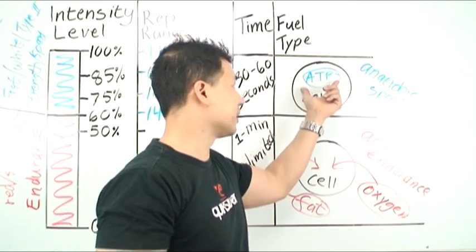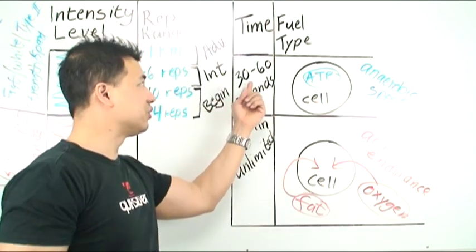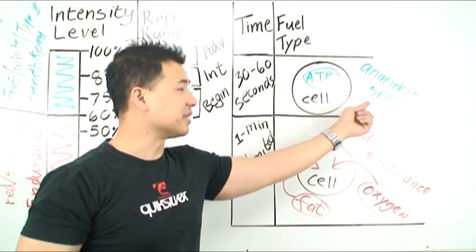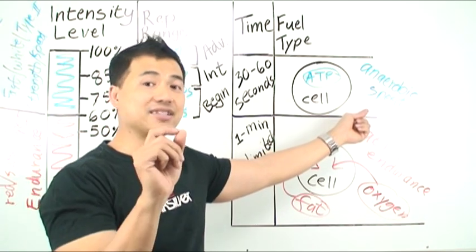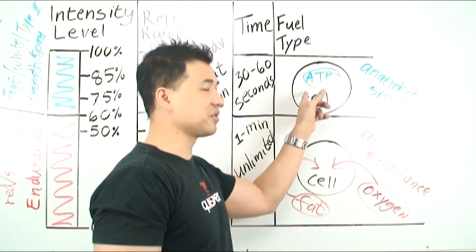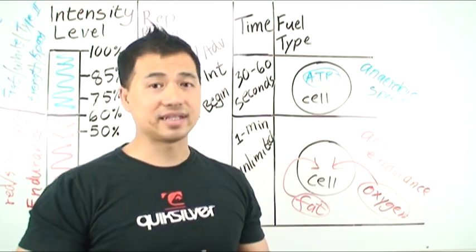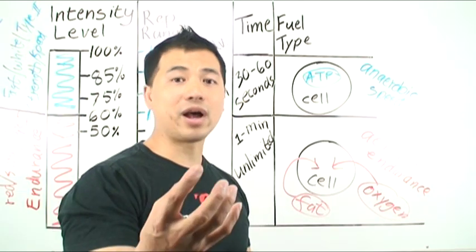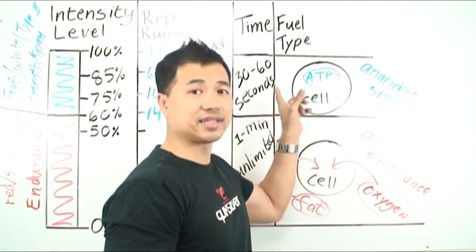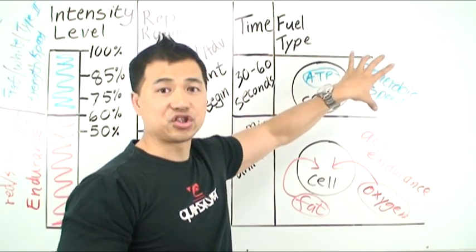That's the reason why you can only train the speed fibers or the fast twitch fibers for only 30 to 60 seconds, because inside the muscle cells there's only enough ATP fuel to last for 30 to 60 seconds. That's why when somebody trains for longer than 30 to 60 seconds, I can tell instantly that they're not training the strength and speed fibers, they're training these fibers down here.